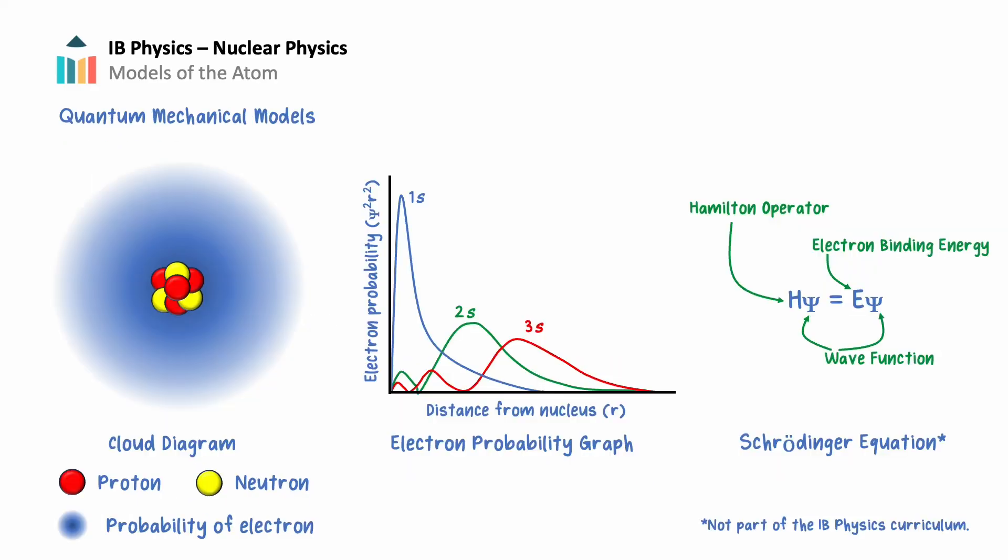The culmination of all of this scientific research is our current understanding of the nature of the atom, the quantum mechanical model. In this model, there is a dense nucleus that contains positively charged protons and neutral neutrons. The negatively charged electrons, now considered matter waves, are located around the nucleus. We can't really say for sure where they are located, but we can say the probability of where they may show up. The modern model of the atom and the probability density of an electron can be represented in many different ways, including cloud diagrams, graphs showing electron probability versus radius from the nucleus, and through equations, notably the Schrodinger equation. These advanced models are typically beyond the scope of high school physics courses.